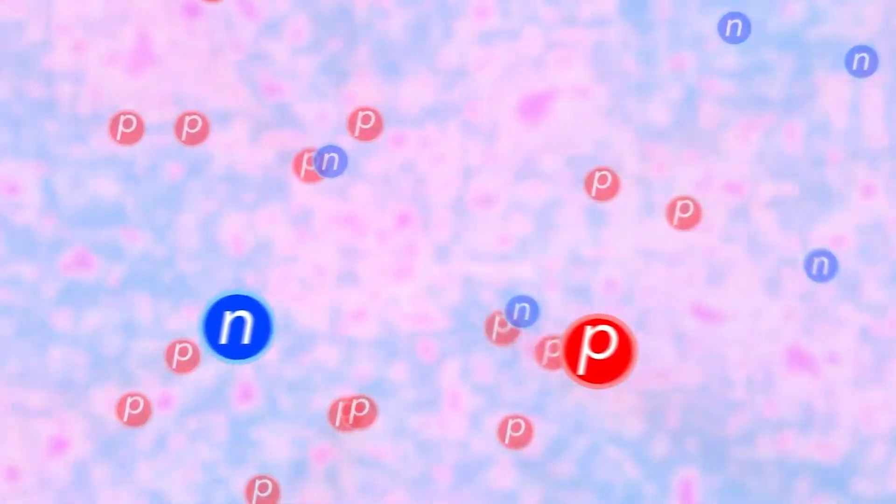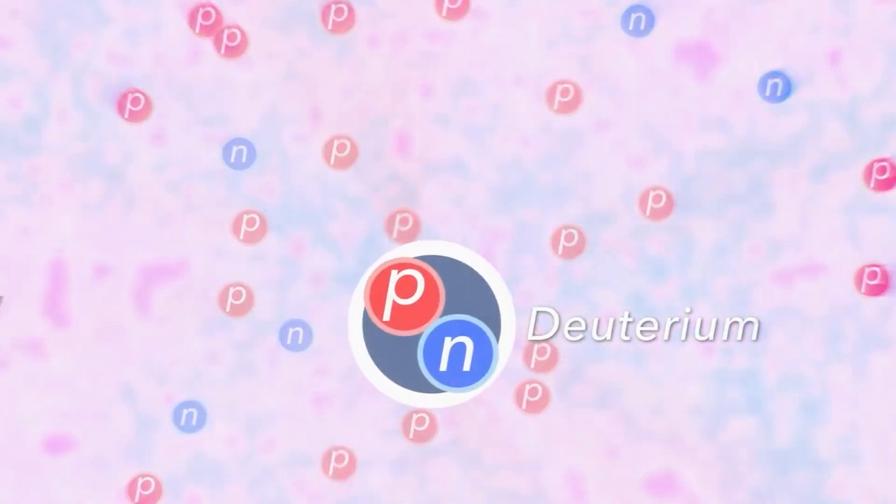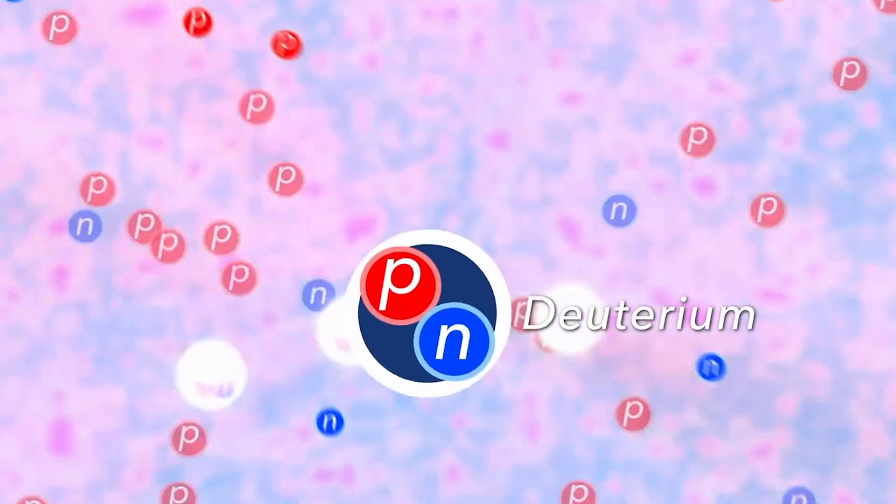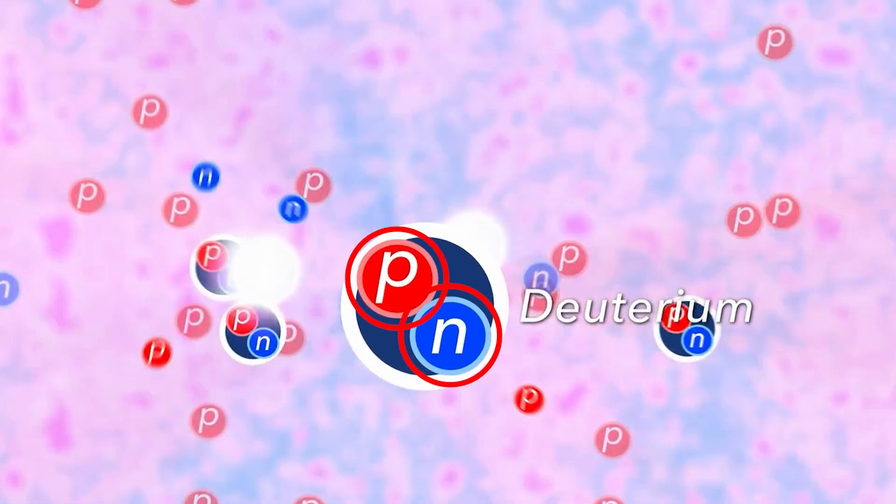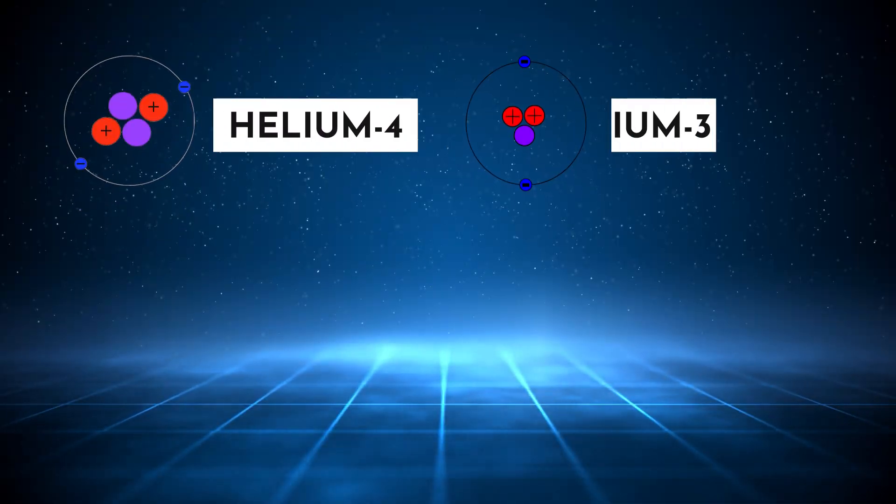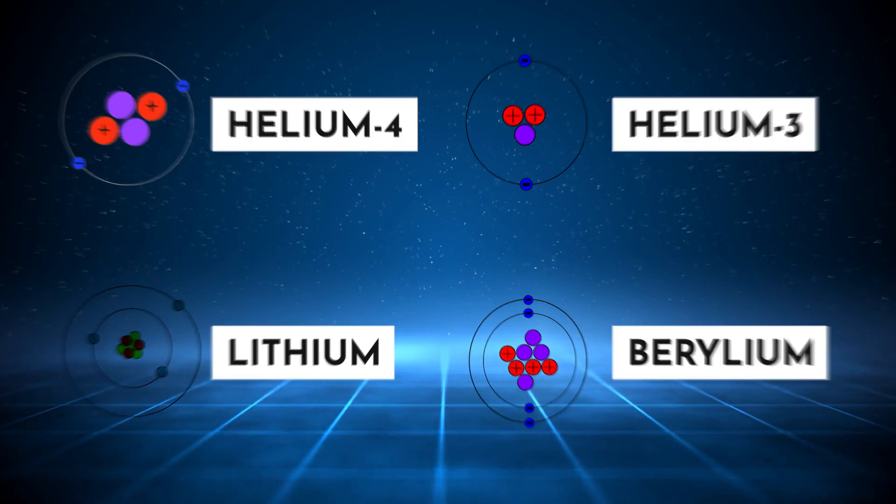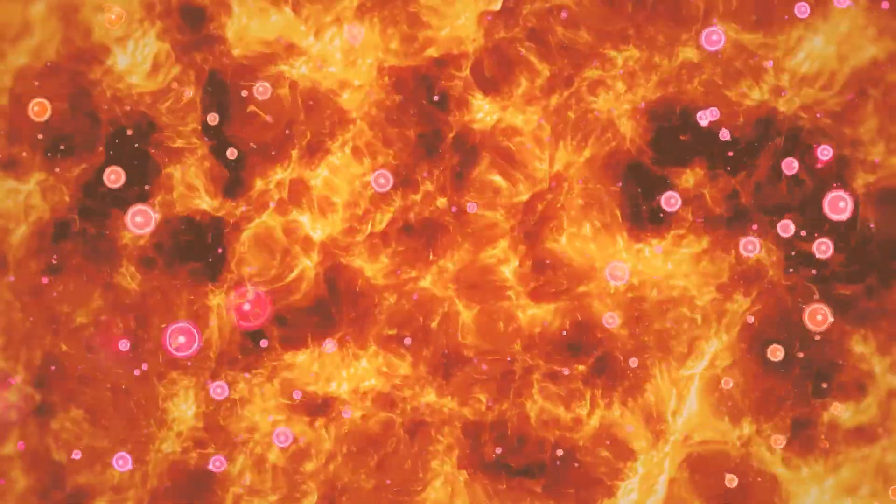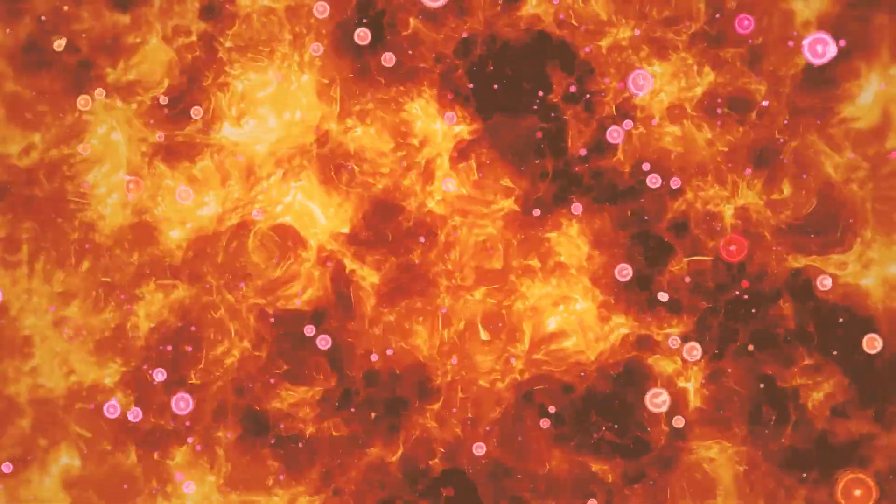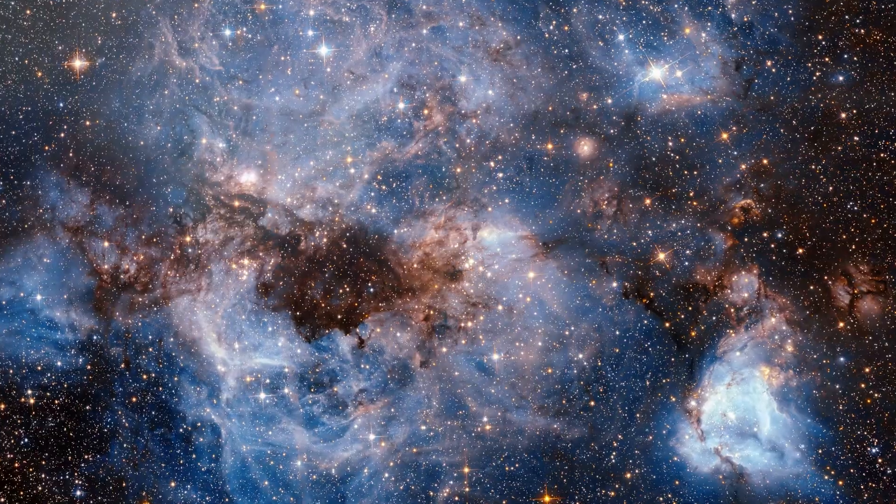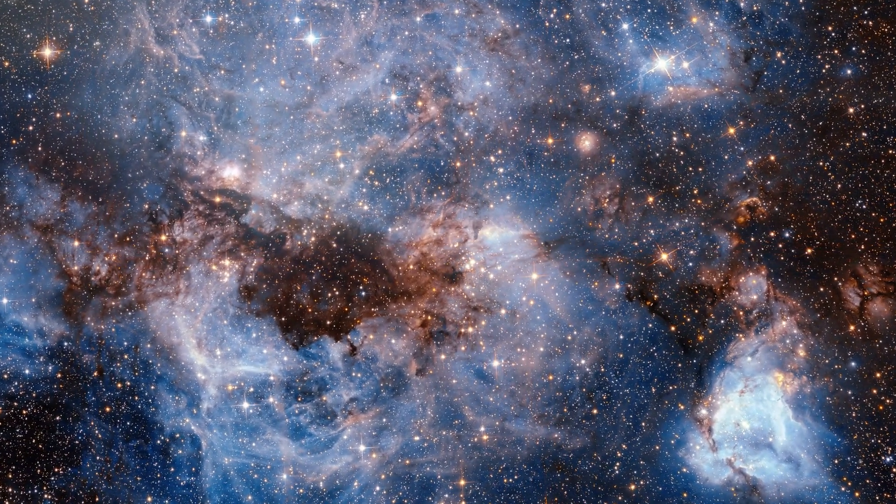This led to the formation of light nuclei, including deuterium, a hydrogen isotope composed of one proton and one neutron, helium-4, helium-3, and trace amounts of lithium and beryllium. However, this nucleosynthesis period was brief, lasting only a few minutes. So how did the universe as we perceive it come to be?